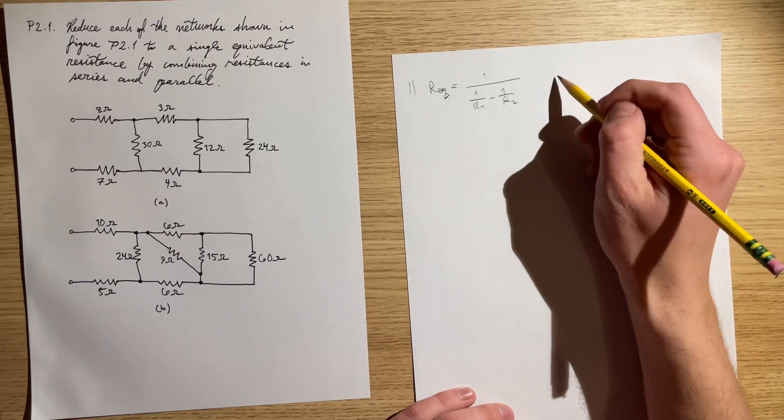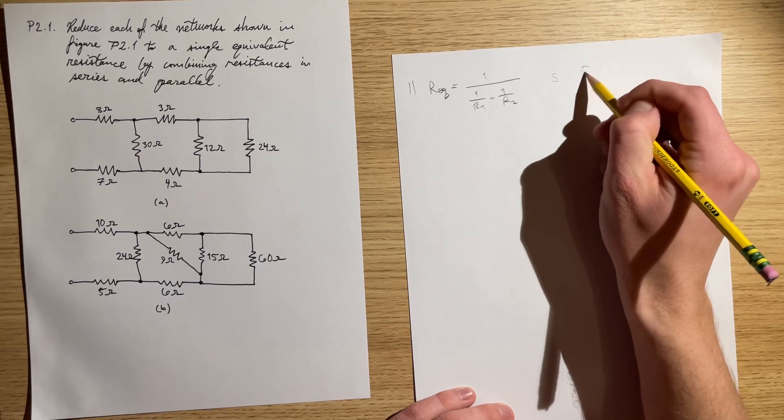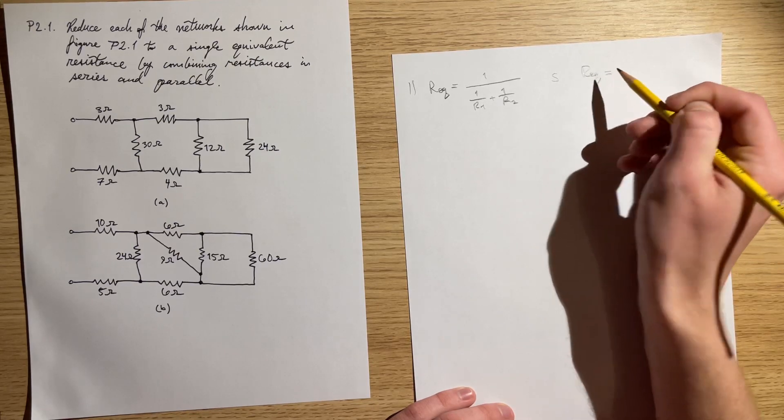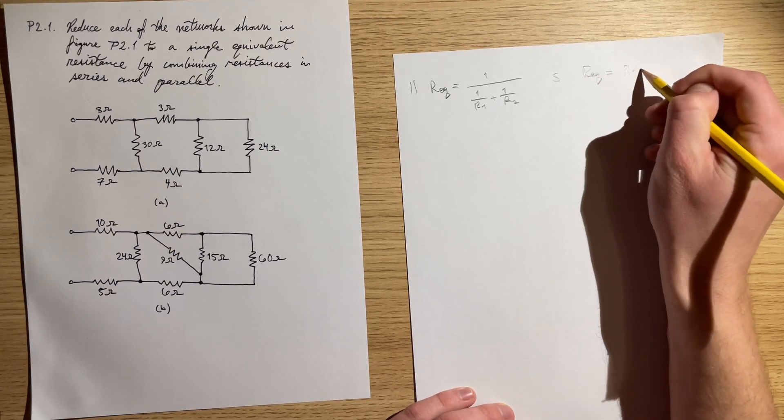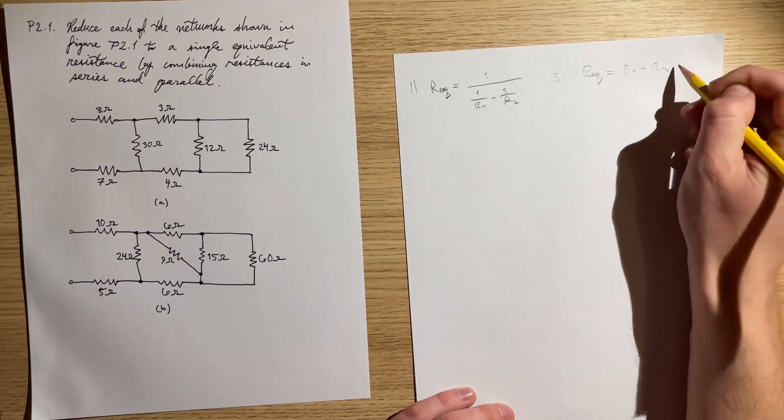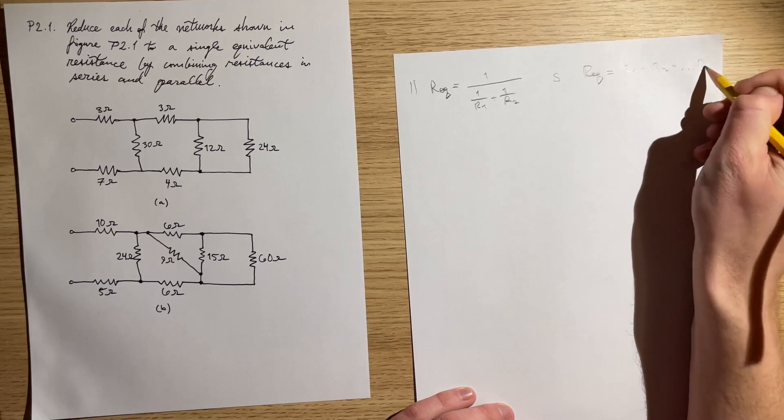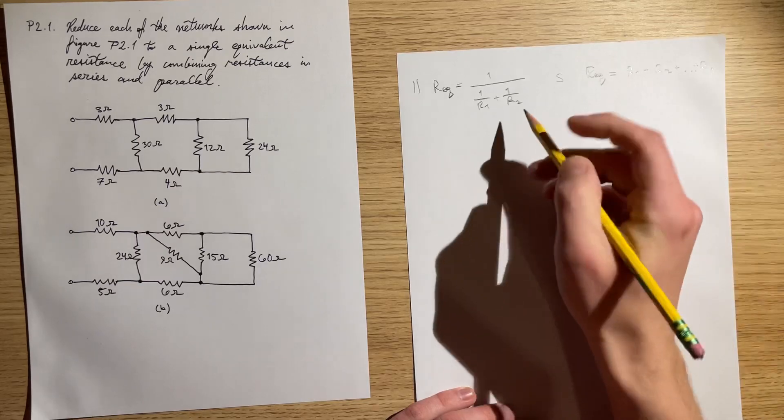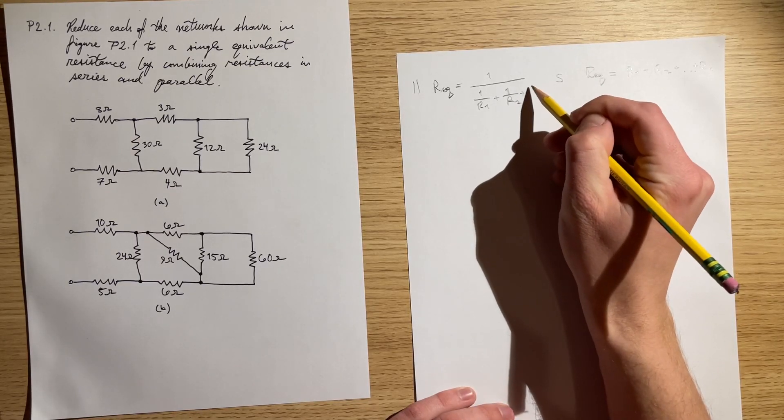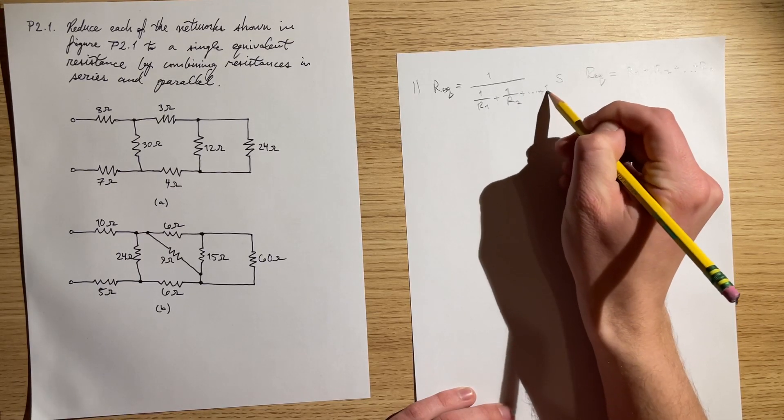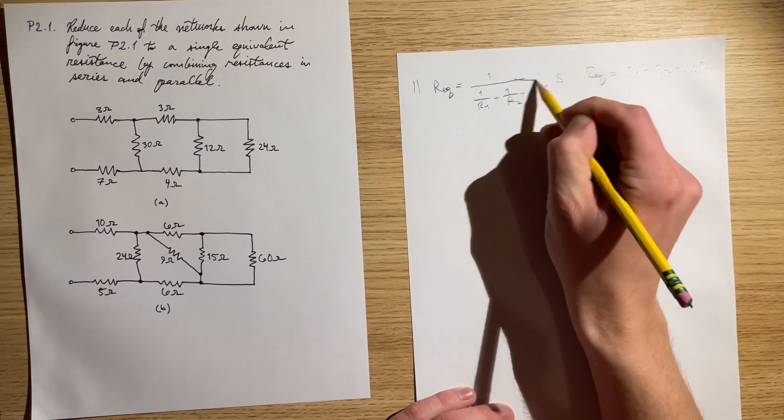And then series: REQ is simply R1 plus R2 plus and so on like that.